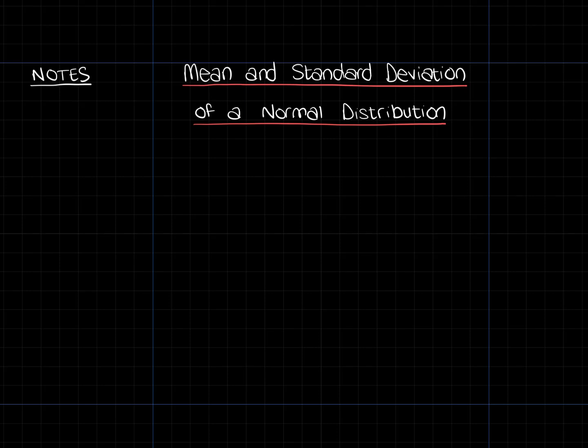Last lesson we looked at the normal distribution and the standard normal distribution. We used the rule z equals x minus mu over sigma to convert into a standard normal, and I said at the time that would be useful for the next bit. What we're going to use that for is finding the mean and standard deviation of a distribution whenever we don't know them.